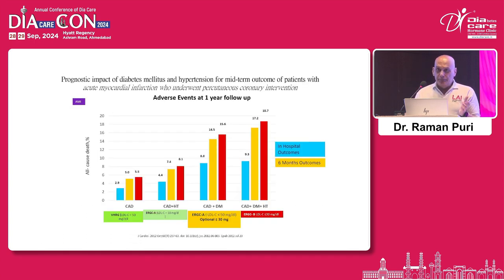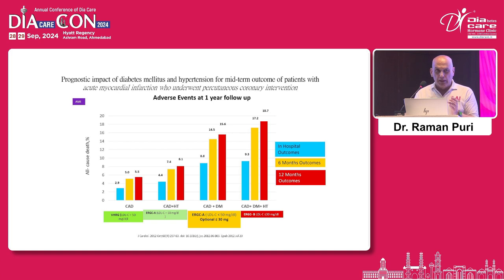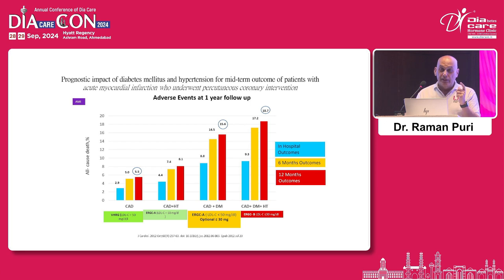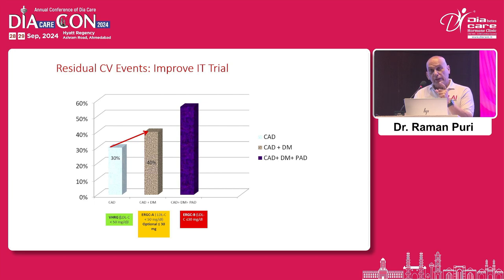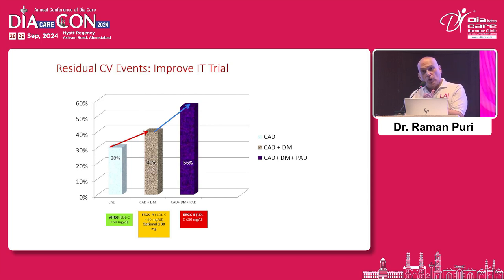The story doesn't end here. This is a study from South Korea where intervention was done in patients presenting with acute myocardial infarction. In 12-month outcomes, 5.5% of patients with coronary artery disease had events — which went up to 15.6% when there was diabetes, and 18.7% when there was associated hypertension. In the IMPROVE-IT trial, coronary artery disease without diabetes had 30% events in seven years. When there was diabetes, events went up to 40%. When there was peripheral artery disease, it went up to 56%. Adding more comorbidities to coronary artery disease and diabetes further increases cardiovascular events.